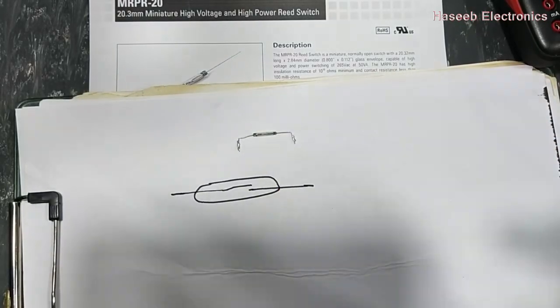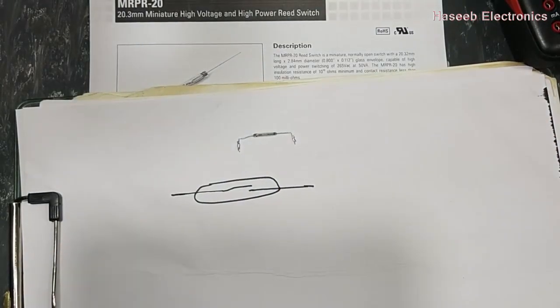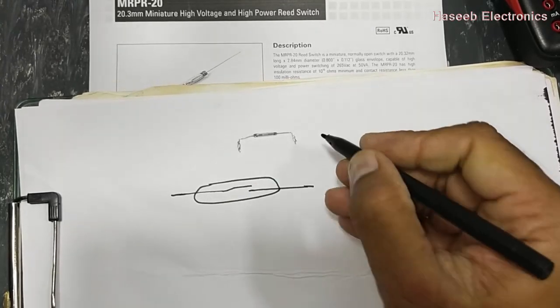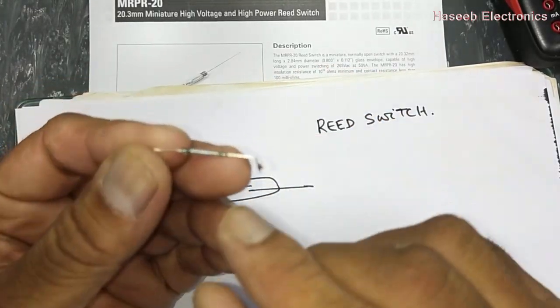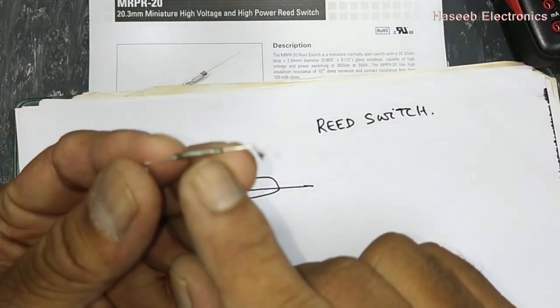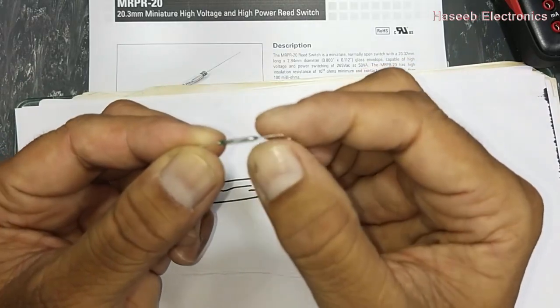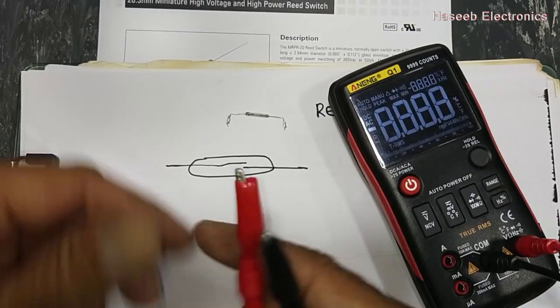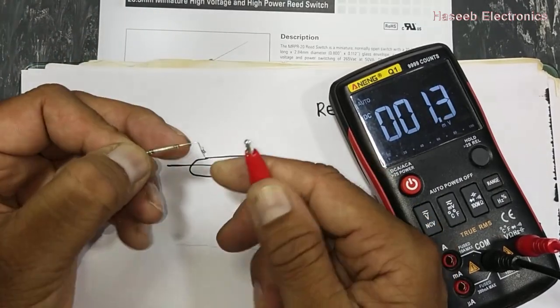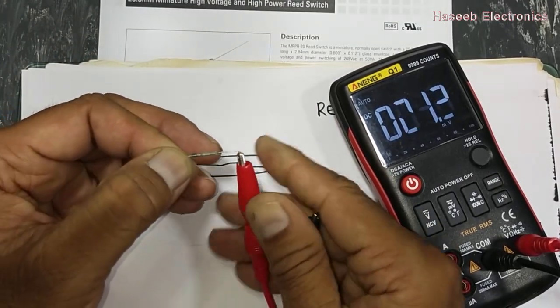Assalamu alaikum warahmatullahi wabarakatuh, friends, welcome back to my channel. Today we will discuss a reed relay or reed switch. It is an electromagnetic switch. It has two contact plates inside and is encased in one glass capsule. When it receives an electromagnetic field, it will contact.